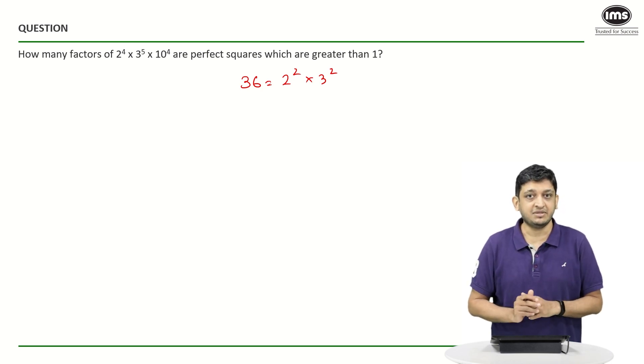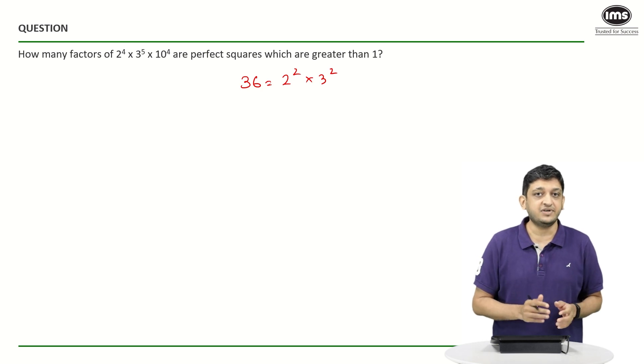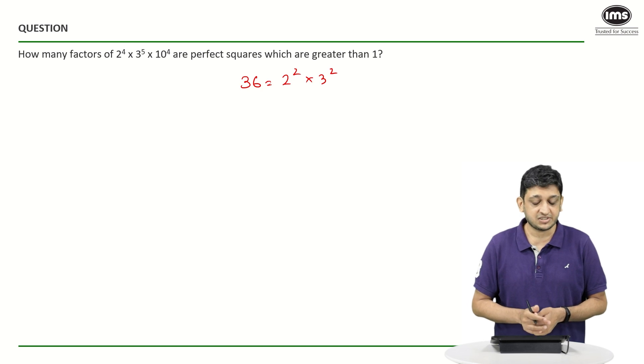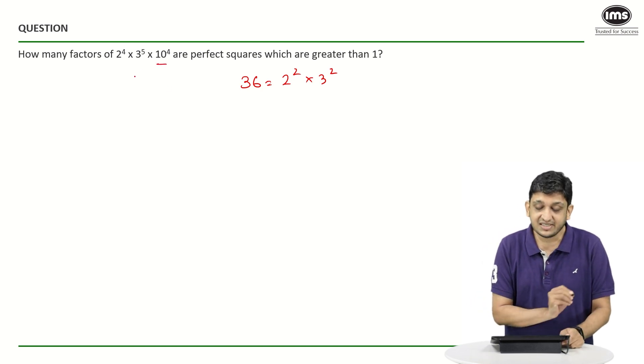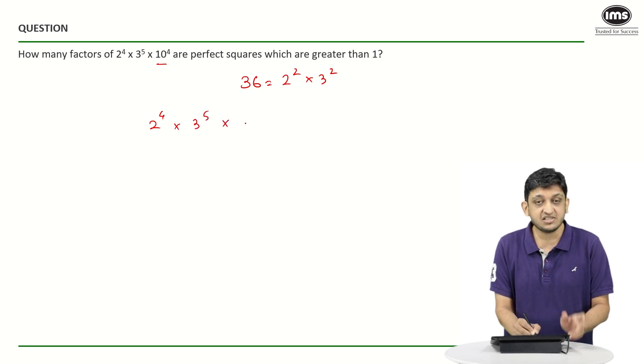And that's why we will need to split this 10 first before we go about figuring out how many factors will be perfect squares. So let's split this 10 first. We are going to get 2⁴ × 3⁵ as it is, and this 10 can be split as 2 × 5.